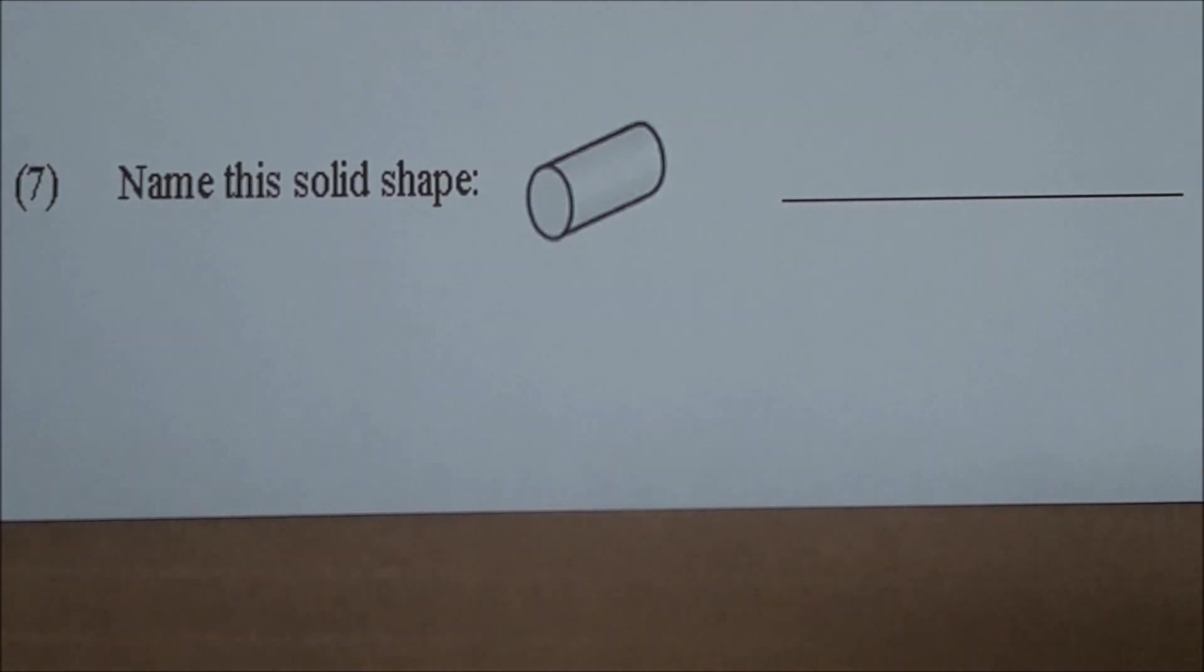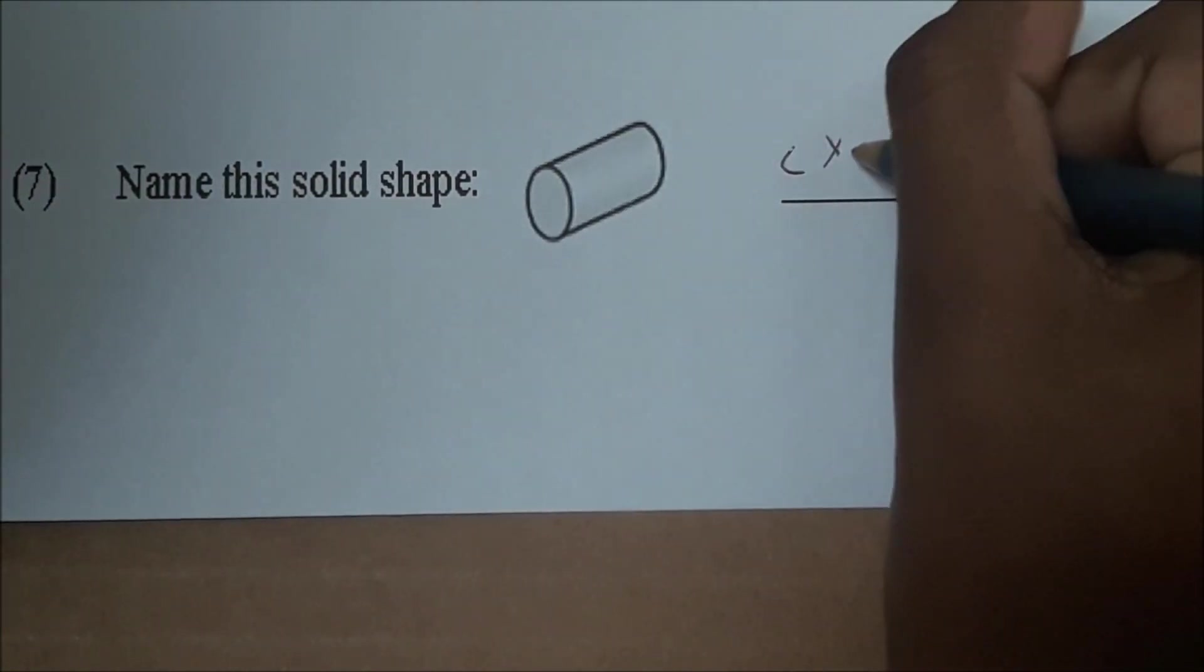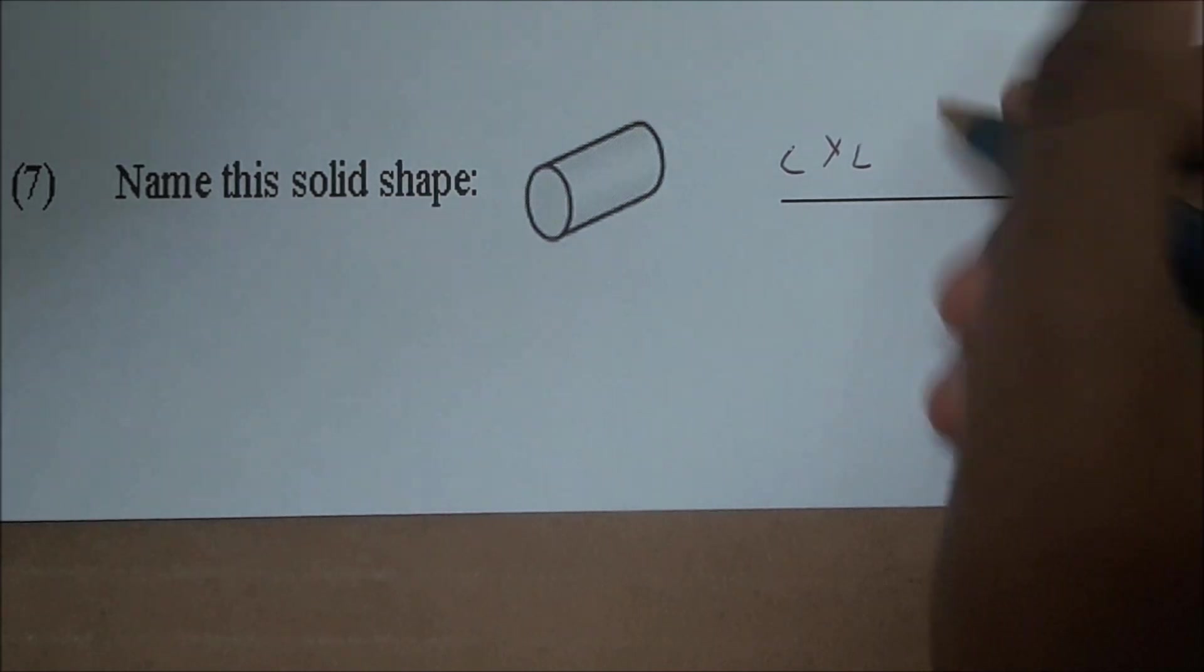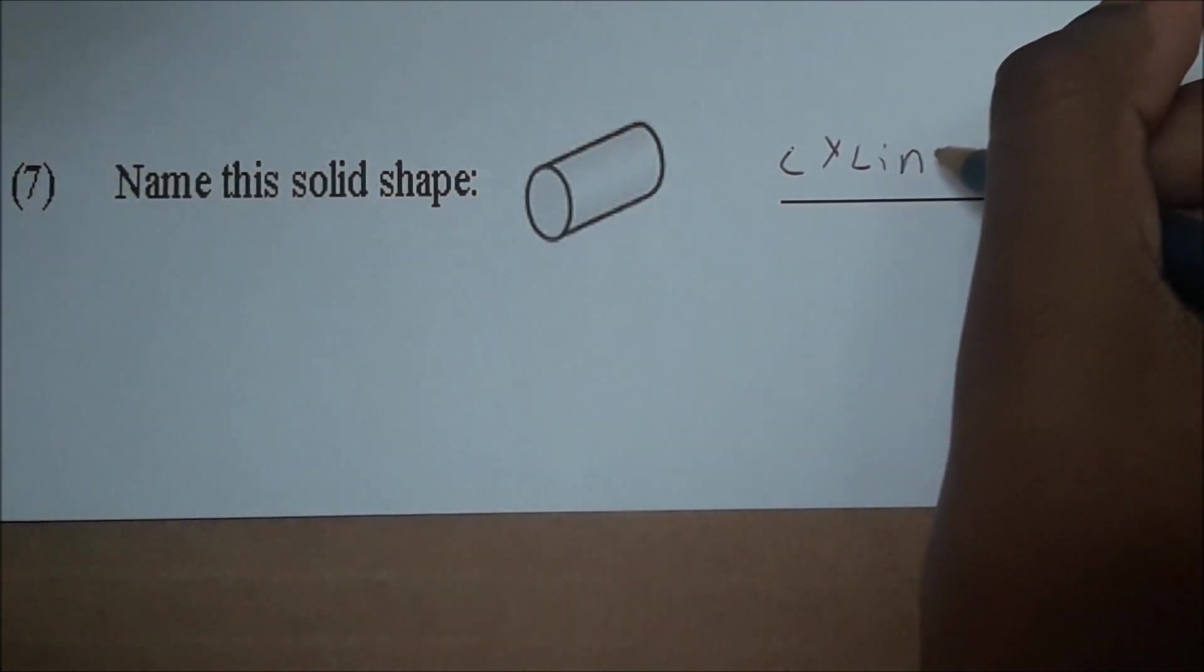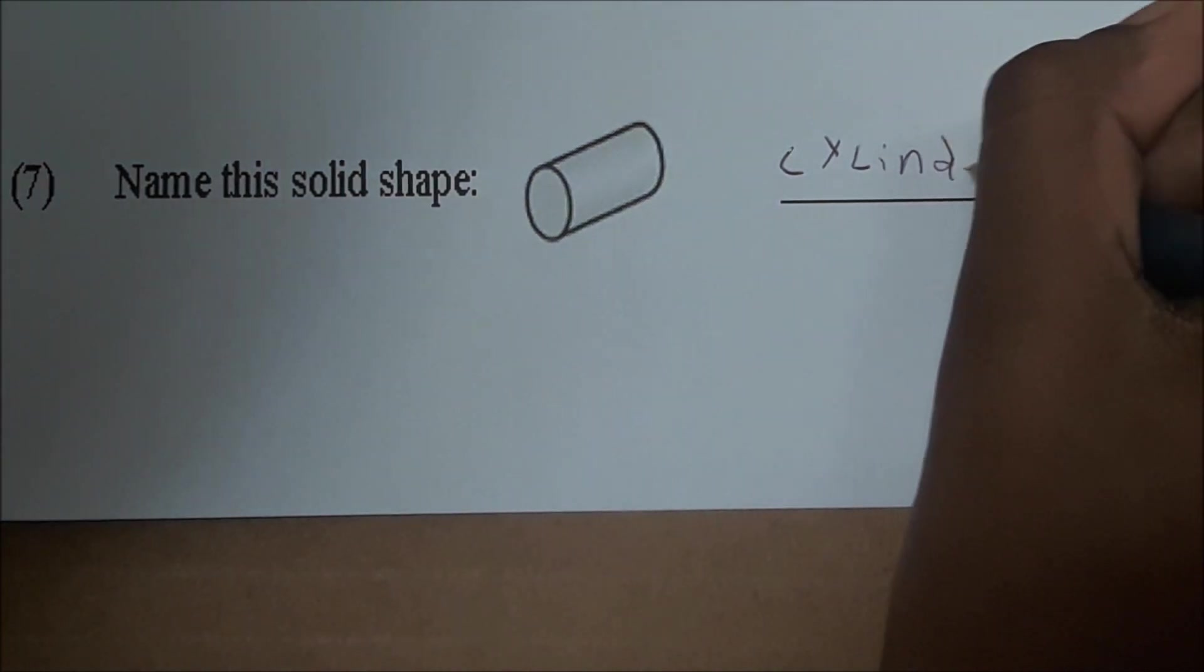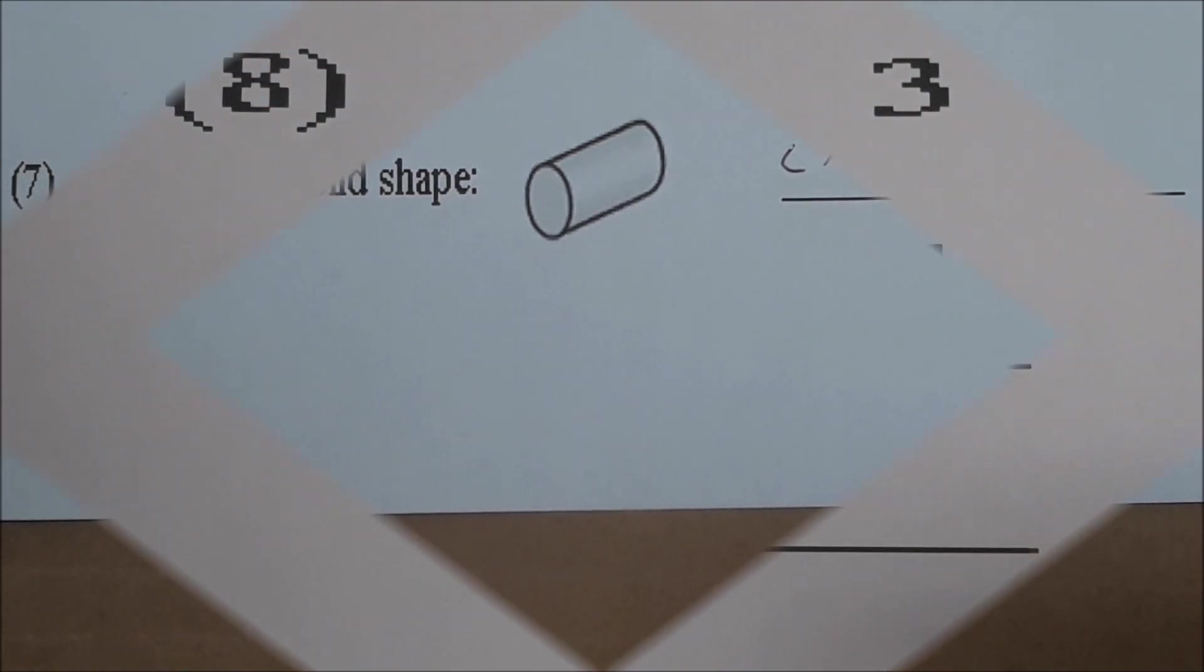Number seven. Read it Sky. Name this solid. Solid shape. What's the name of that solid shape? Cylinder. Okay and spell it right down the line first Sky. Cylinder. Cylinder is the name of that solid shape. Excellent job.